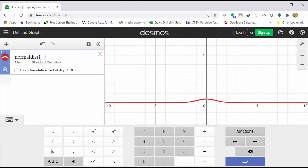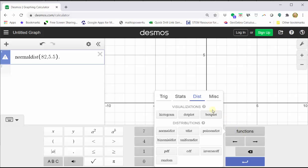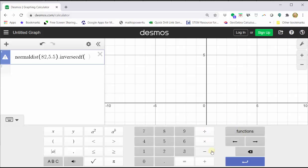Now we enter the mean comma, the standard deviation, and therefore we enter 82 comma 5.5, close parenthesis, period. Click functions, and now select inverse CDF. And now we enter the area or percent to the left of the test score, which would be 90% or as a decimal 0.9.